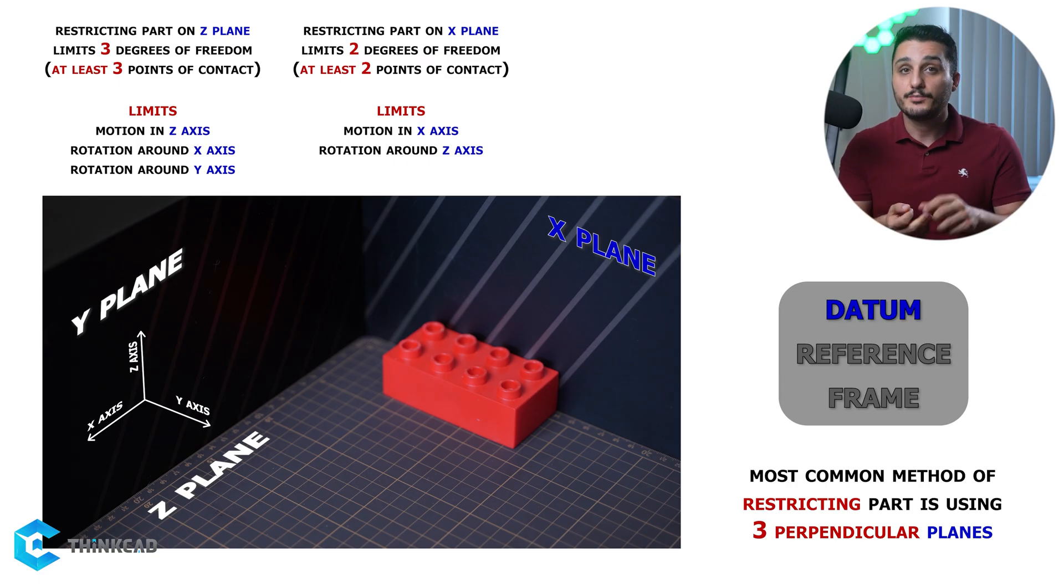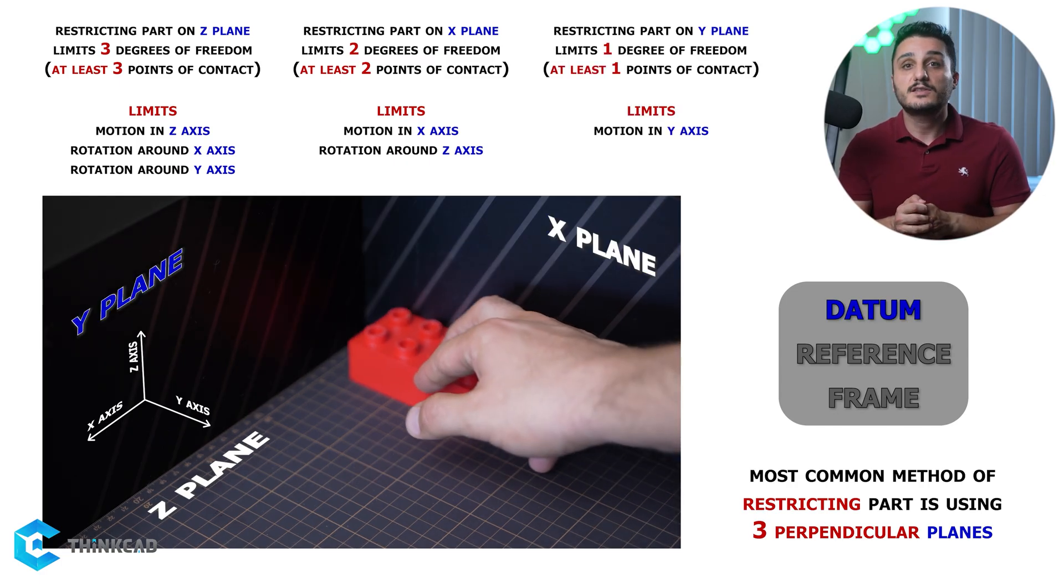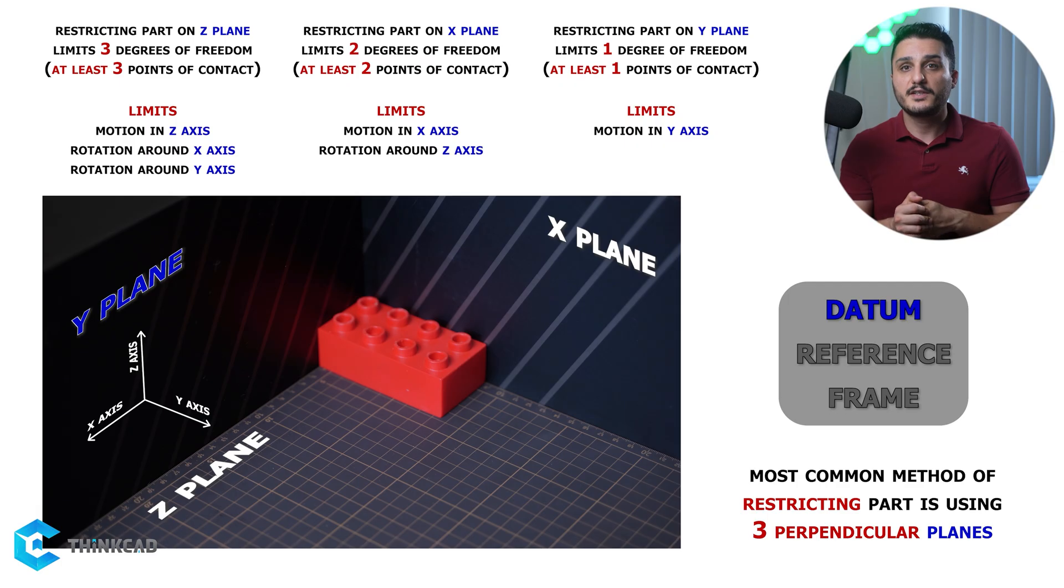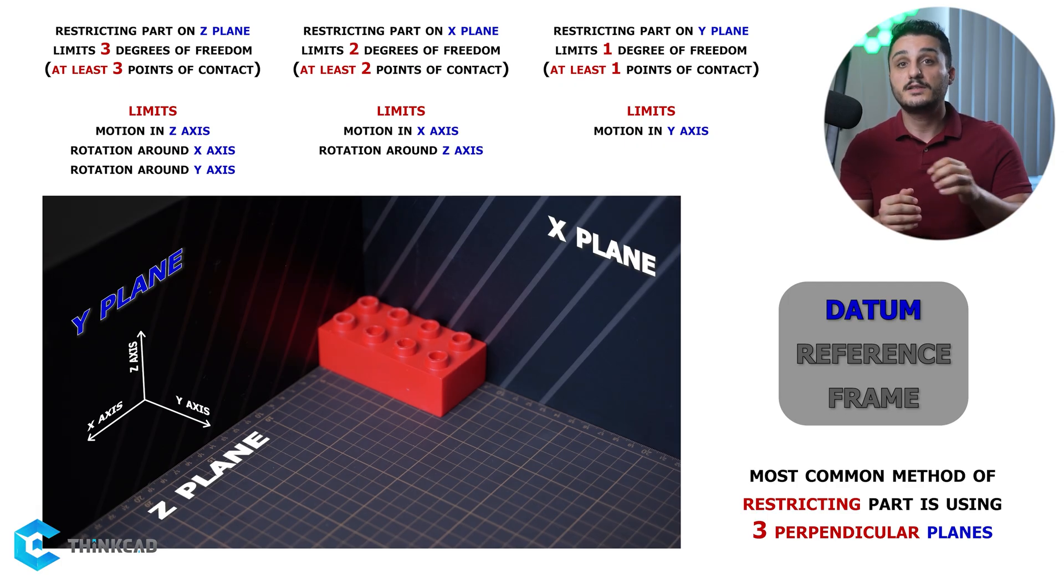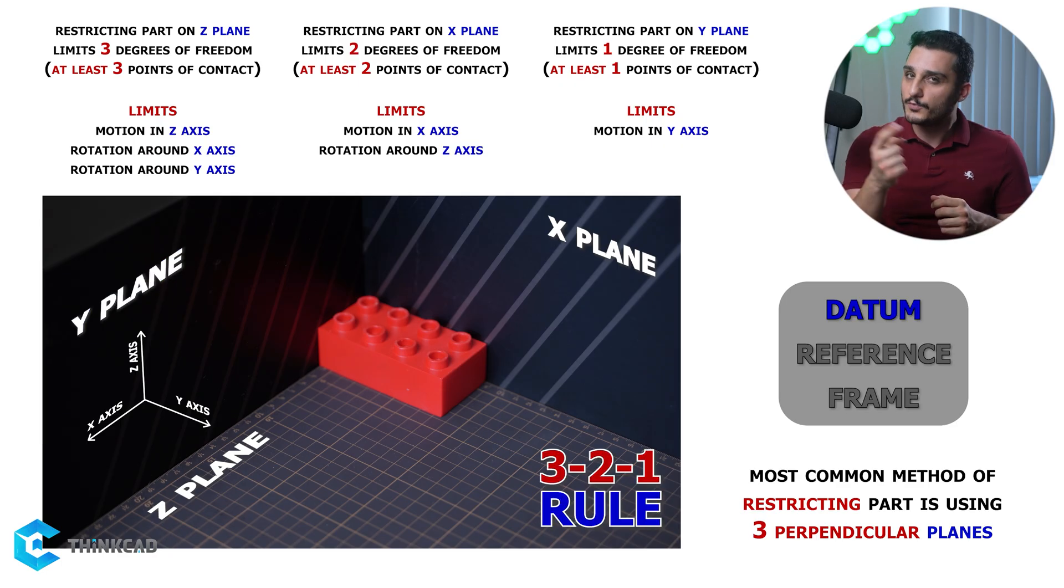Now the third plane, being your y-plane, limits the last degree of freedom by having at least one point of contact with your surface. This way, motion in the y-axis is also limited. This is also known as the 3-2-1 rule in GD&T.